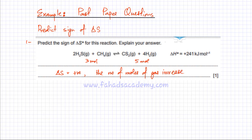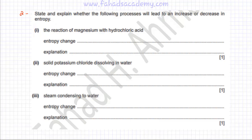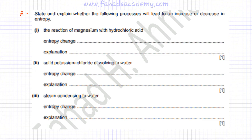The reasoning you would give in your past paper exam is that the number of moles of gas are increasing in the above reaction, hence delta S is positive. Here's the second past paper example question — it's a similar question where you have to find and predict the sign of delta S. The question states you have to explain whether the following processes will lead to an increase or decrease in entropy. They have not given you an equation and they've asked you to figure out the reaction yourself.